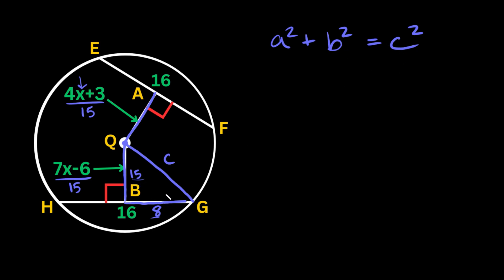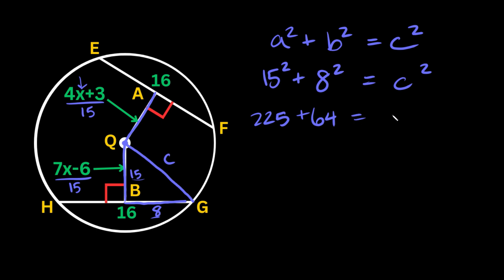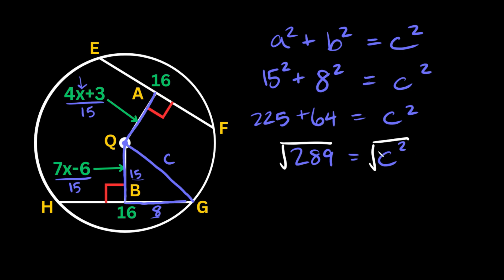To find the missing side we use the Pythagorean theorem: a squared plus b squared equals c squared. Plugging in 15 and 8: 15 squared plus 8 squared equals c squared, which is 225 plus 64 equals c squared. That gives 289 equals c squared. Taking the square root of both sides, c equals the square root of 289, which is 17. So the radius of the circle is 17.